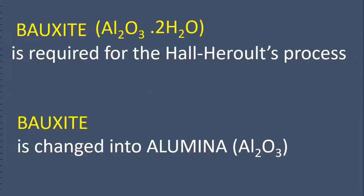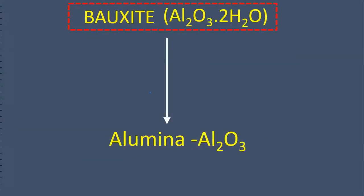Alumina is Al2O3. Aluminium is Al. Please understand the difference.